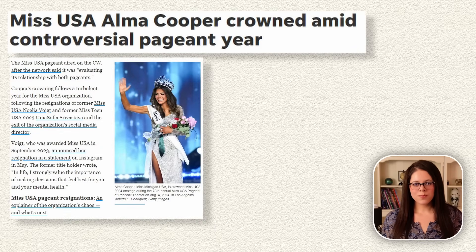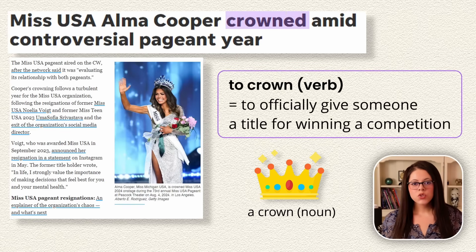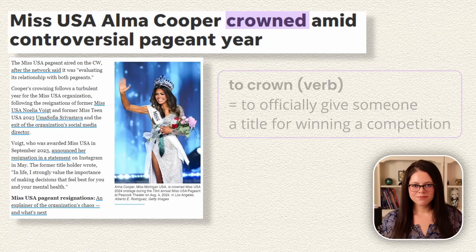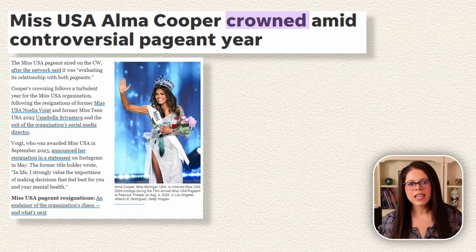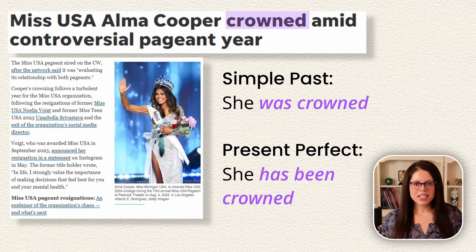Miss USA, Alma Cooper, crowned amid controversial pageant year. To crown is a verb that means to officially give someone a title for winning a competition. It's very common to see this verb in the passive voice, because we don't know or care about who exactly put the crown on her head — we want to focus on the result. So the complete sentence would be: 'She was crowned' in simple past tense, or 'she has been crowned' in present perfect tense.